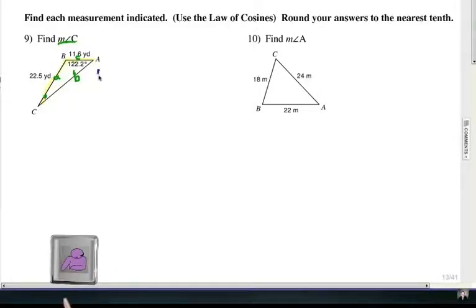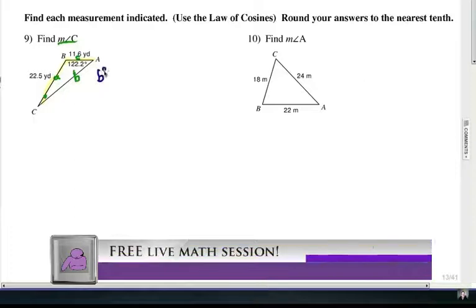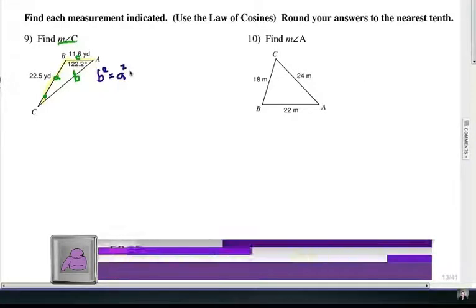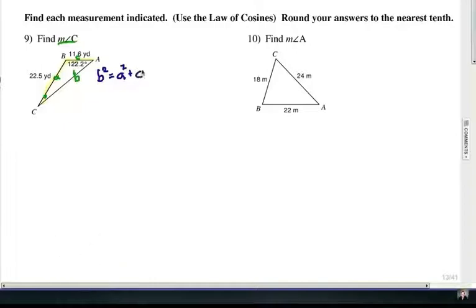So let's go ahead and write this out. So b² equals a² plus c², and remember the rest of the formula, it's minus 2ac, and then we're going to repeat B, but it's going to be the cosine of the angle, cosine B. We do have to know angle B because we have to find the cosine value of that.